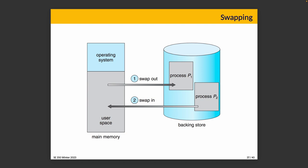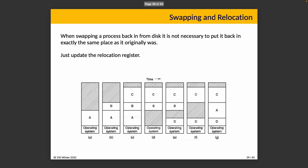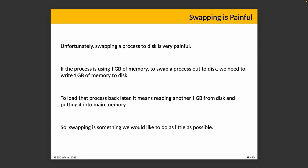Unfortunately, swapping a process to disk is quite painful. If a process is using one gigabyte of memory, we need to write one gigabyte to disk, and to load it back we have to read that gigabyte again. For reference, with five PDF files open totaling 80.6 megabytes, the macOS Preview application consumed two gigabytes of memory. That's a lot of data, and we'd only want to swap it if absolutely necessary. In practice, most operating systems don't actually do full swapping because it's too slow — a modified form of swapping is used, which we'll discuss later.